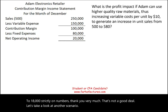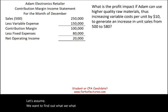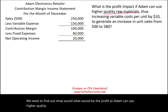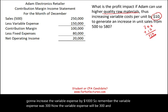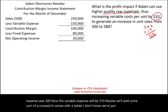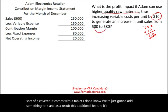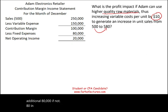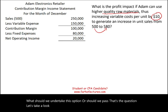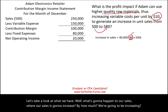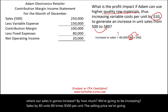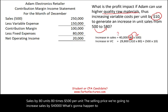Let's look at another scenario. What would be the profit impact if Adam uses higher quality material — a better processing unit — increasing variable expense by $10 (from $300 to $310)? Maybe we add a cover or a feature to the tablet. As a result of this additional feature, we expect an increase of 80 additional units in sales. Should Adam undertake this option? Sales would increase by 80 units × $500 = $40,000.